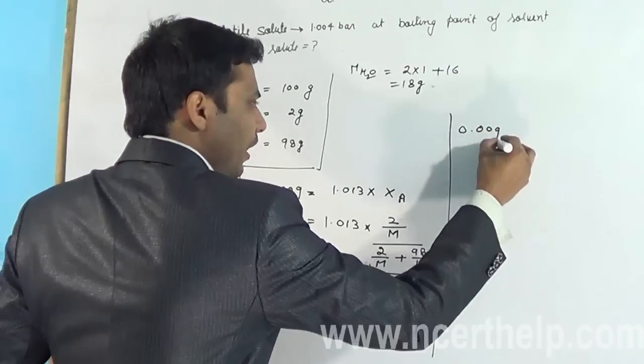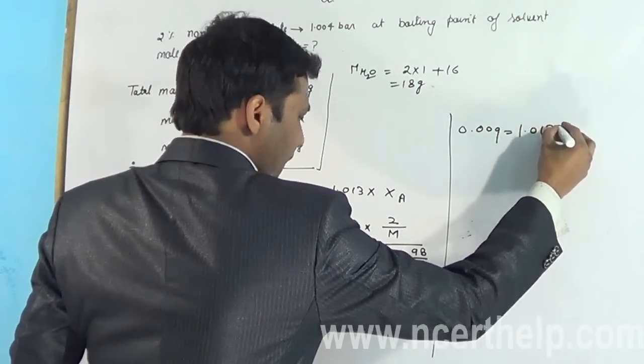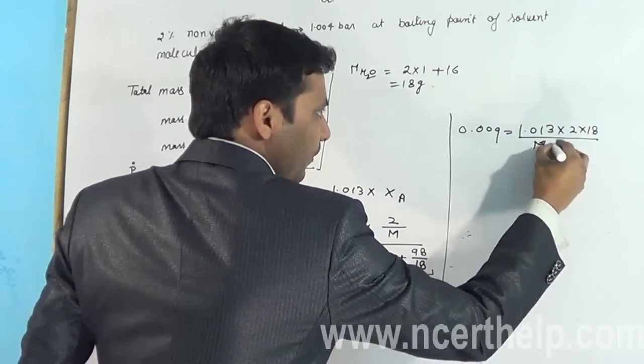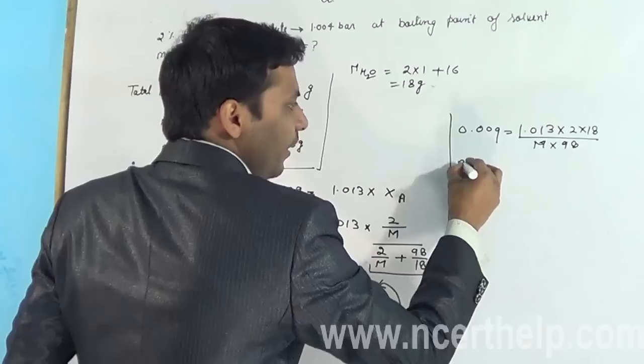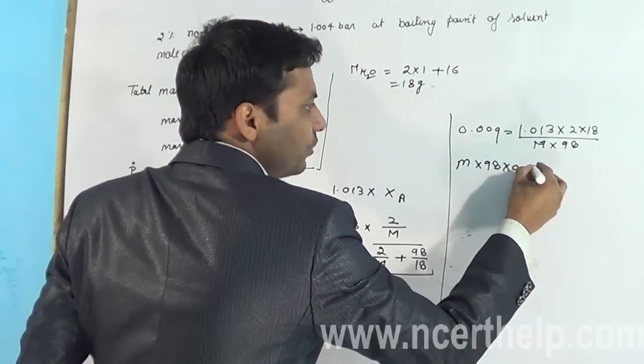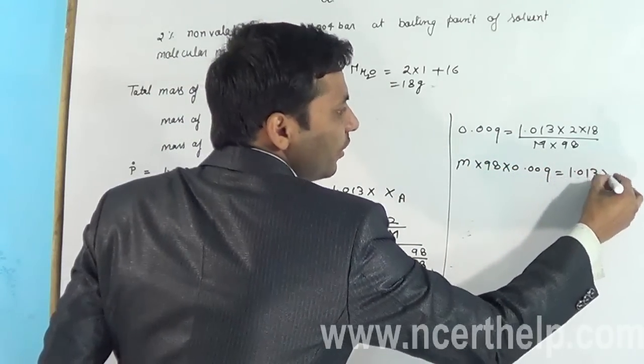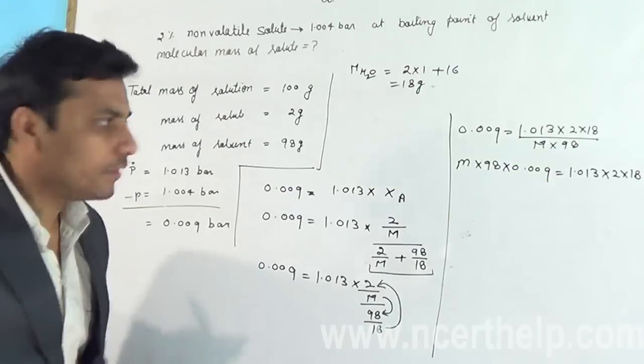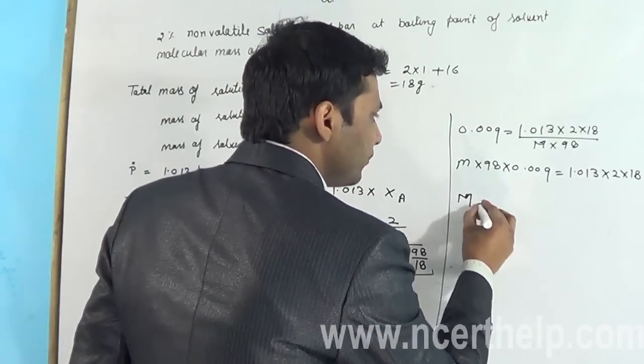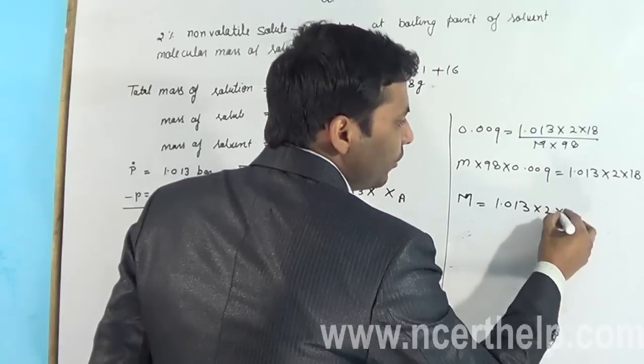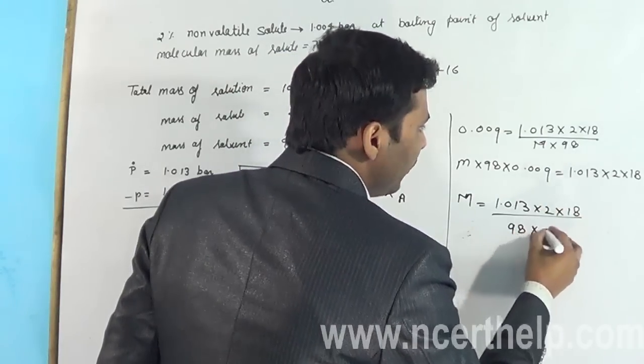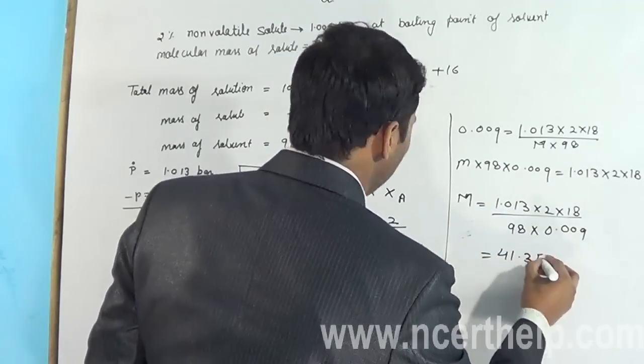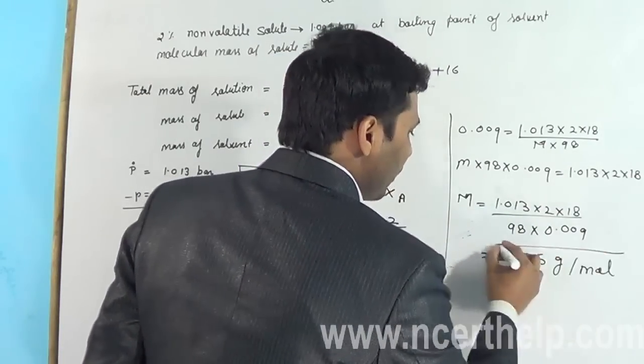0.009 is equal to 1.013 into 2 into 18 divided by M into 98. Now cross multiply: M into 98 into 0.009. Now we have to calculate it, so M will equal to 1.013 into 2 into 18 divided by 98 into 0.009. And after calculation we will get 41.35 grams per mole. This is our answer.